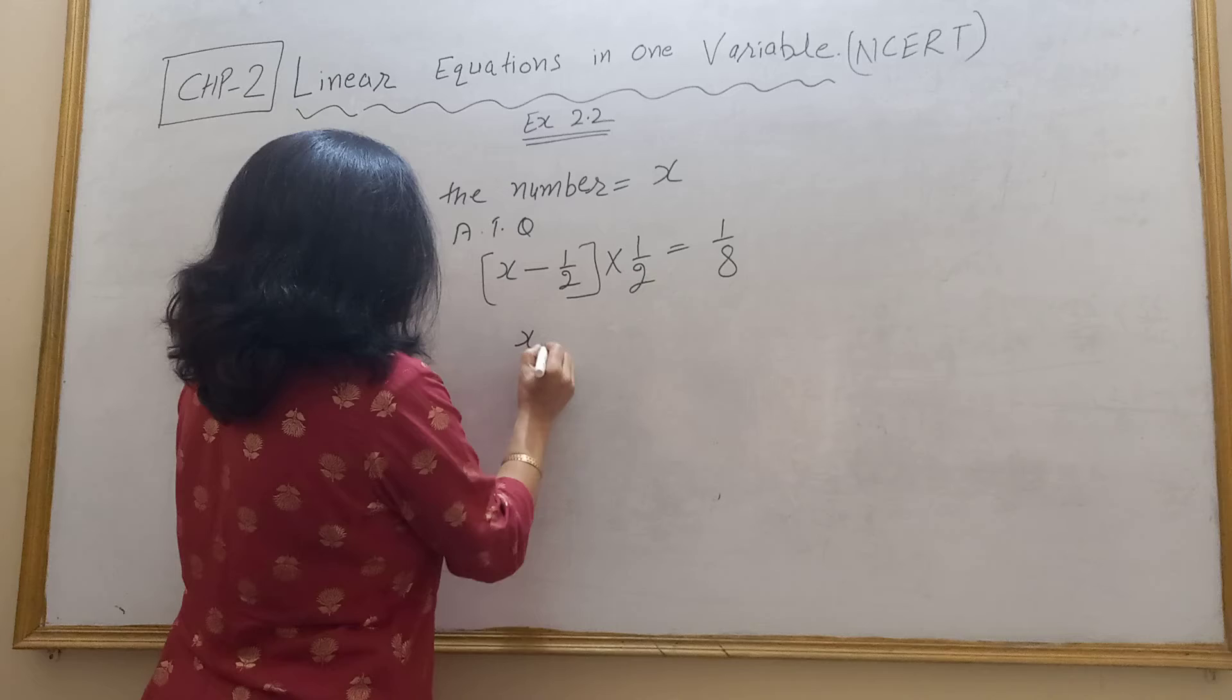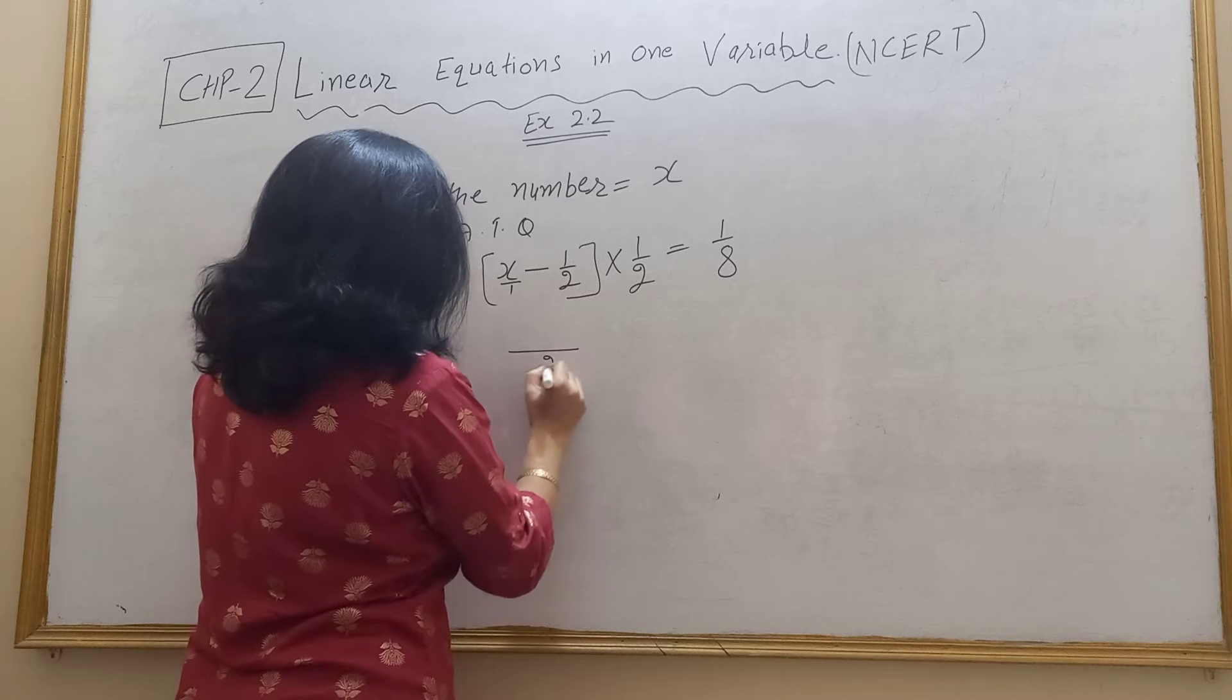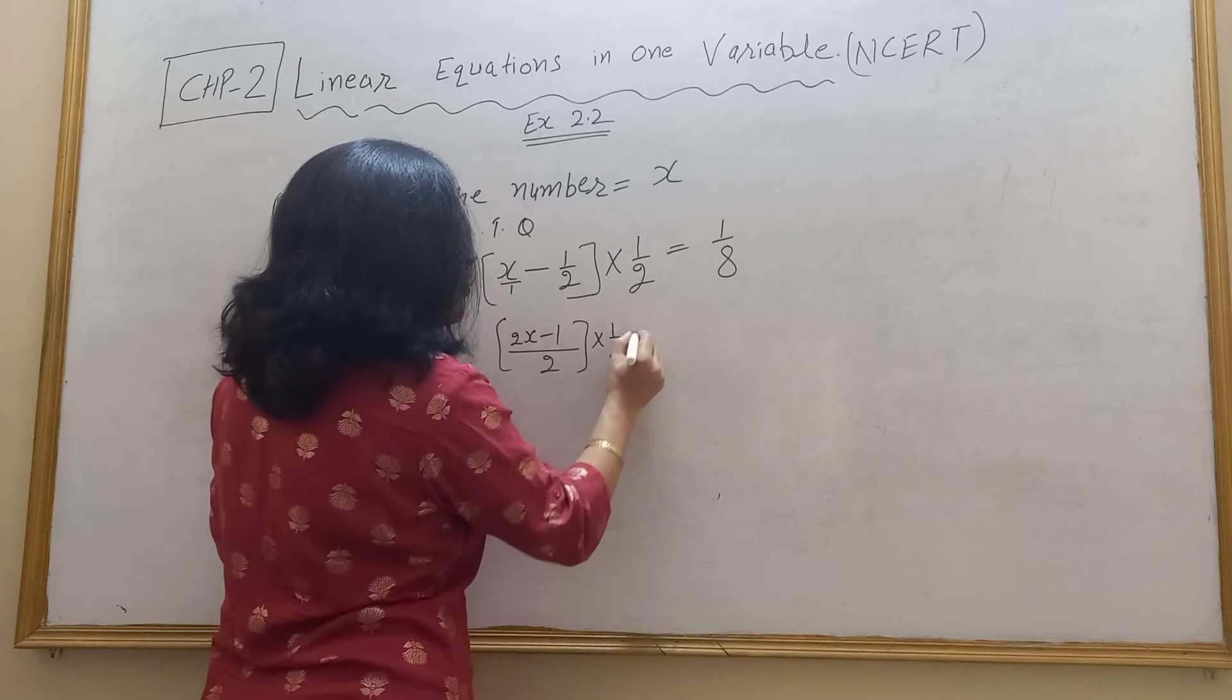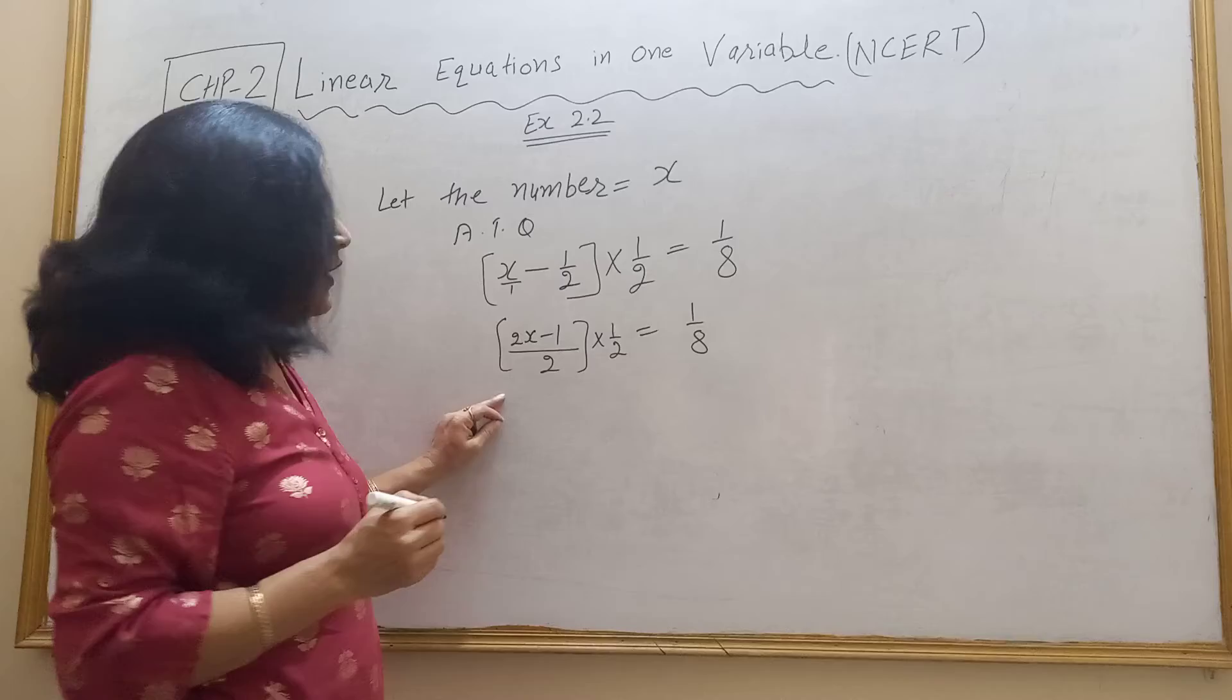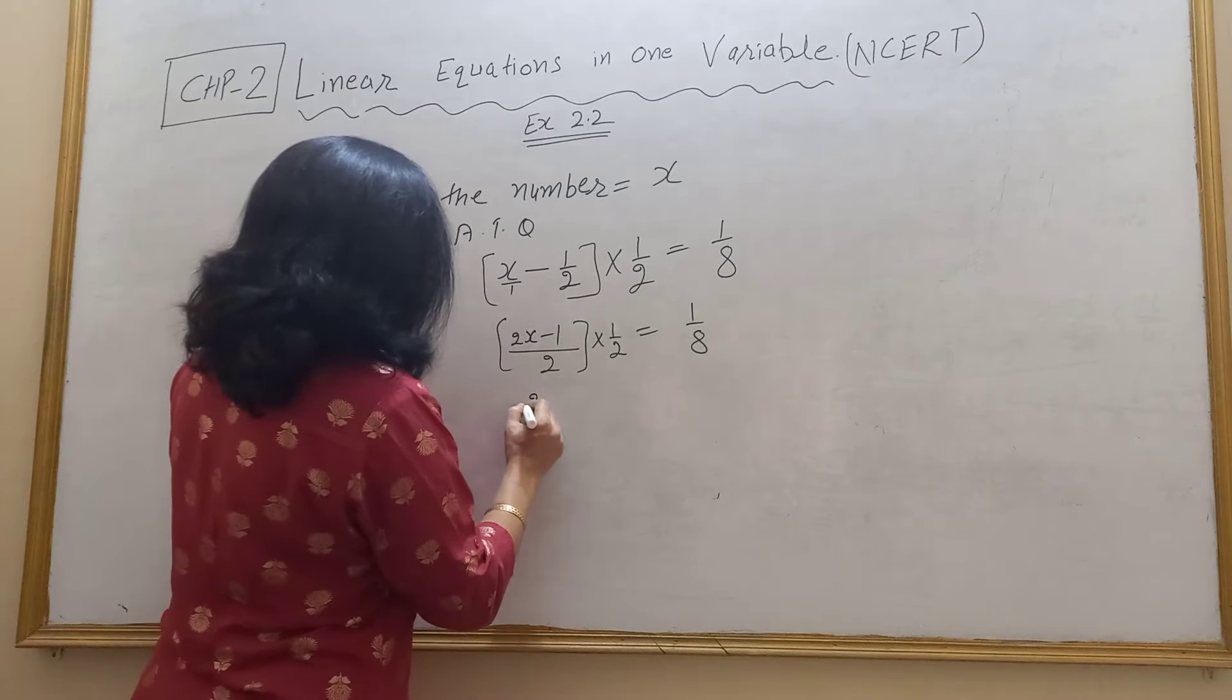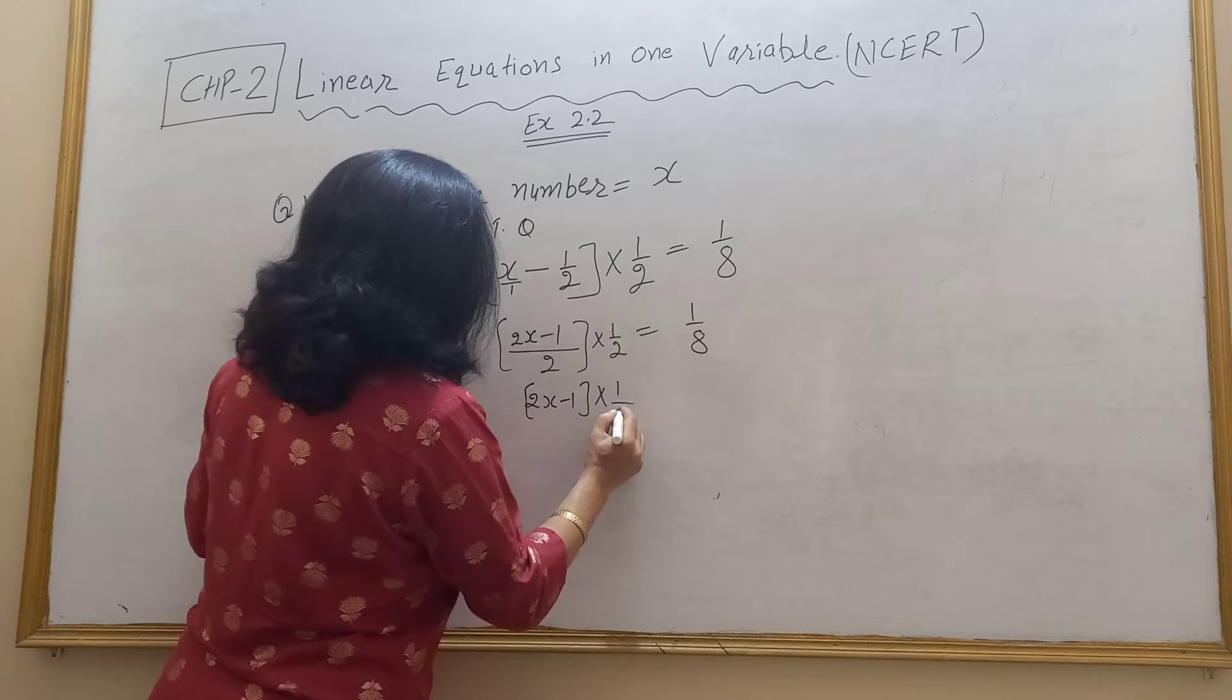x, 2 is the LCM, this is the denominator. 2 is the LCM, so 2x minus 1 upon 2 into 1 upon 2 is equal to 1 upon 8. Now 2 is the denominator and this is the denominator we can multiply. So 2x minus 1 into 2 into 2, 4.